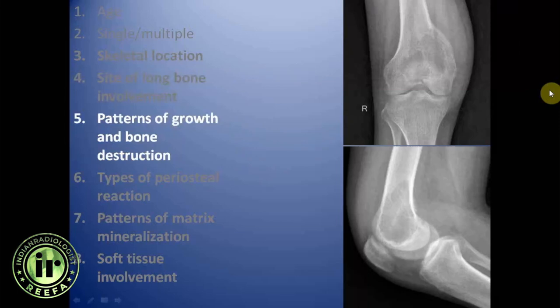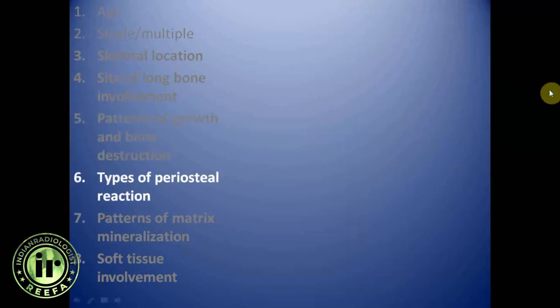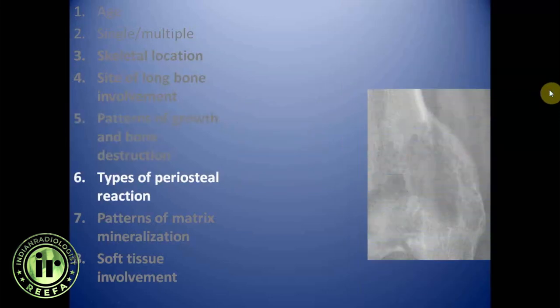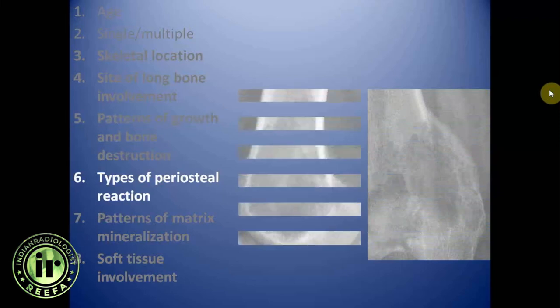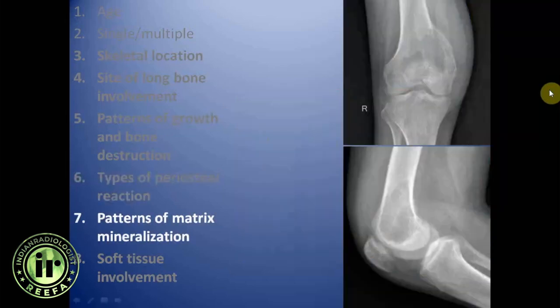The pattern of growth and bone destruction is geographic to moth-eaten with a narrow zone of transition. The type of periosteal reaction shows mild periosteal buttressing and is predominantly non-aggressive. There is no obvious chondroid or osseous matrix mineralization in the tumor.